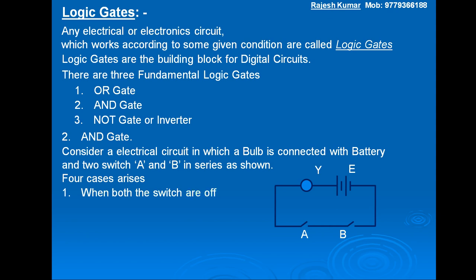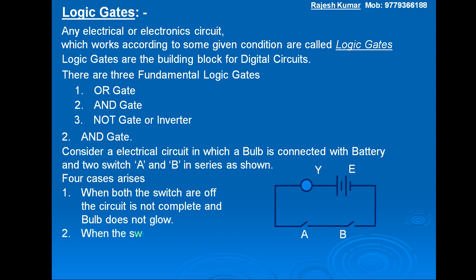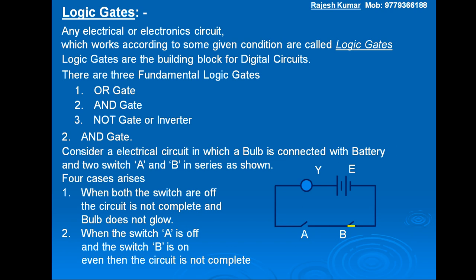Four cases arise. Number one: when both the switches are off, the circuit is not complete and the bulb does not glow. Second case: when switch A is off and switch B is on — see in the diagram, switch B is on — even then the circuit is not complete and the bulb does not glow.